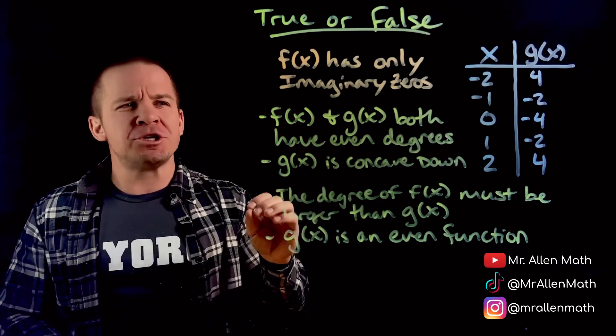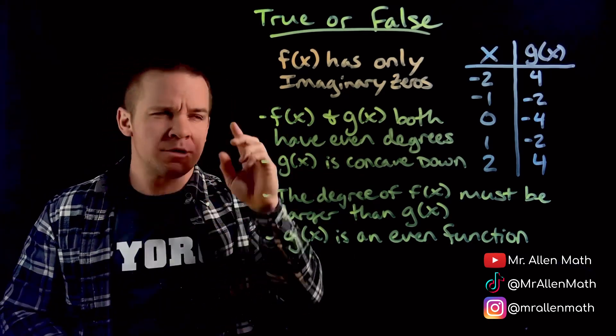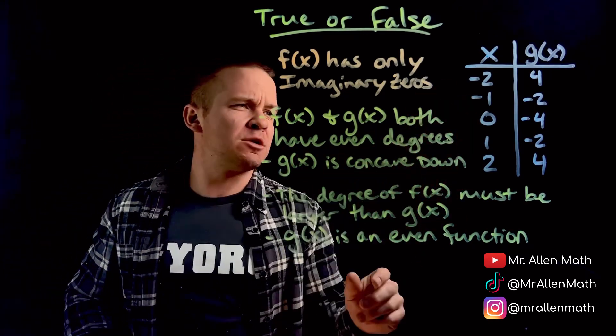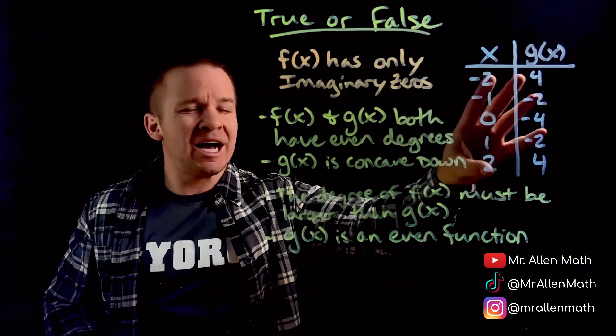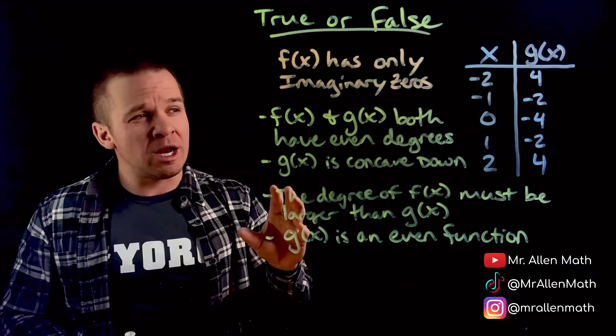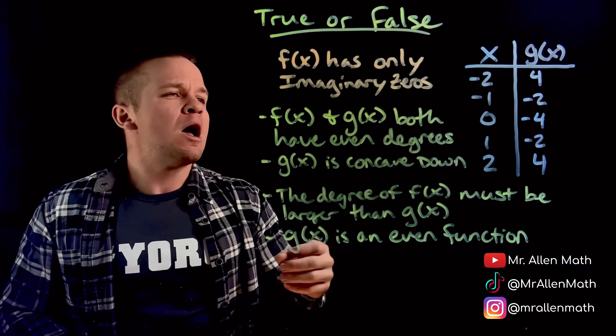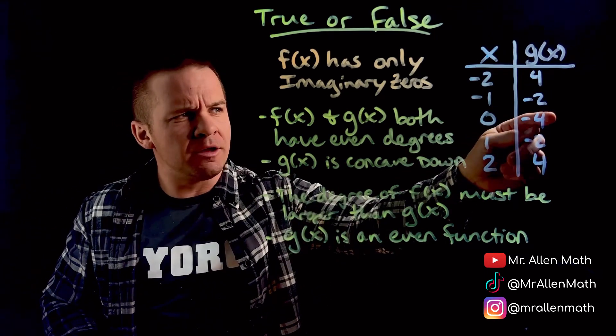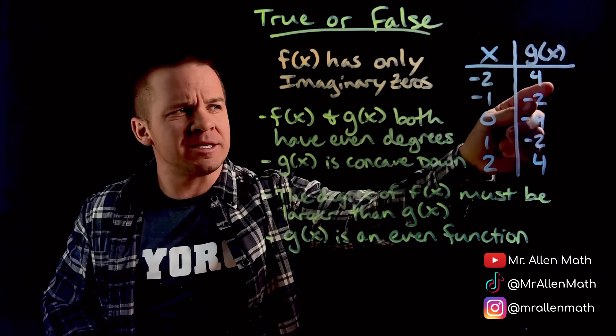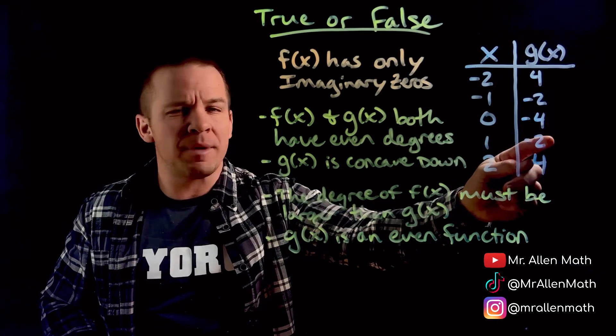So only imaginary zeros. Those always come in pairs. Let's remember that. g of x over here, if we look at our output values, I see some symmetry going on. So I'm looking at perhaps an even degree function here. So it's also going up by, it looks like, by 2 here and then by 6 here. By 2 here and by 6 here.